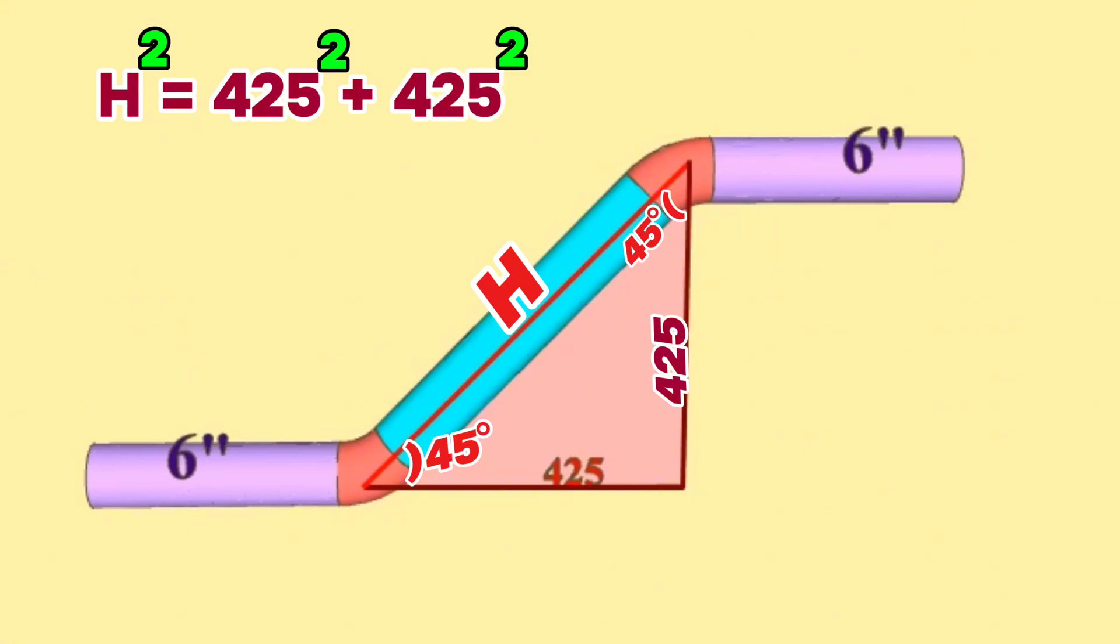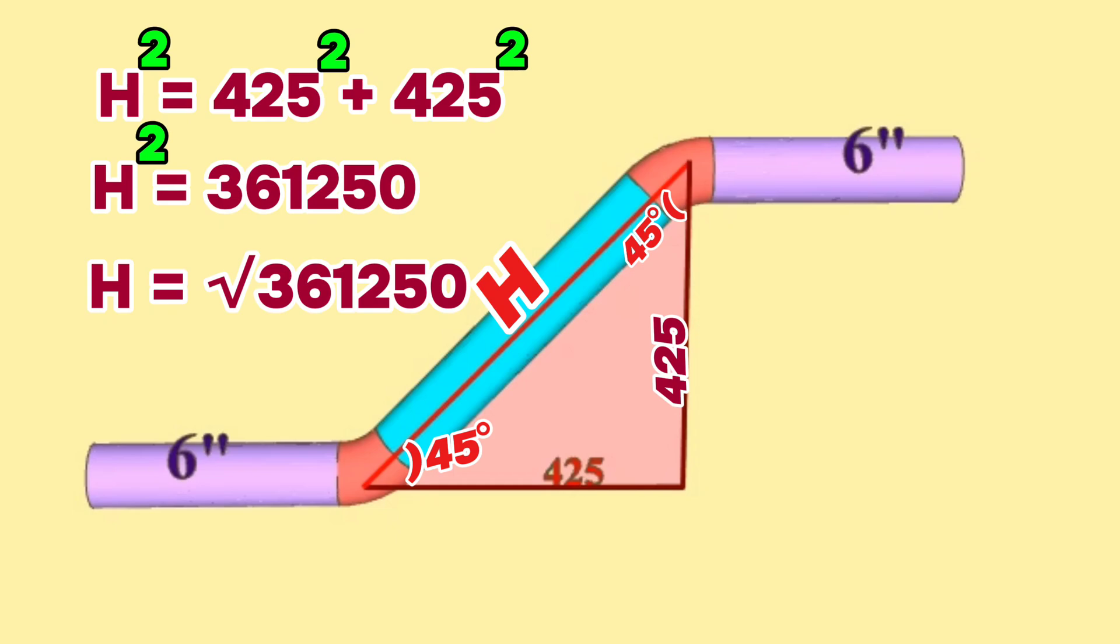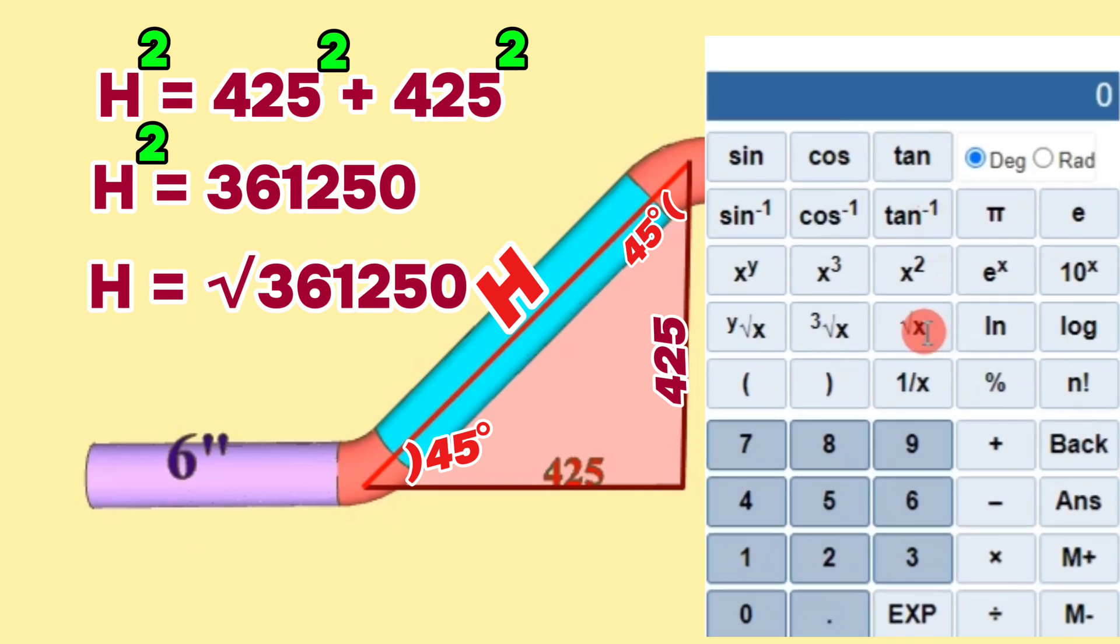Continue to calculate: H squared equals 361250. We continue to calculate to find H more easily. H will equal the square root of 361250. At last we will use a scientific or phone calculator and find H equals 601 millimeters.